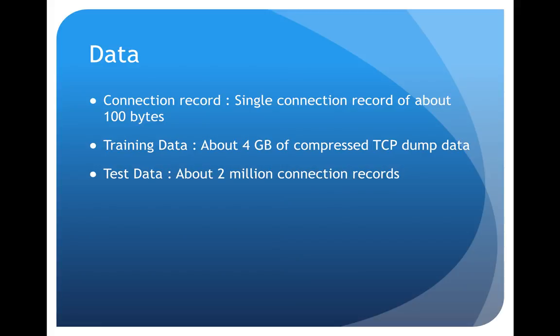Data that I'm using has a training dataset and a test dataset. The records in test dataset are basically records that I don't know about. I will classify those based on the information that I get in the training dataset. Training dataset is about 4GB of compressed TCP dump data and test data has about 2 million connection records. Every record in both these datasets is about 100 bytes.